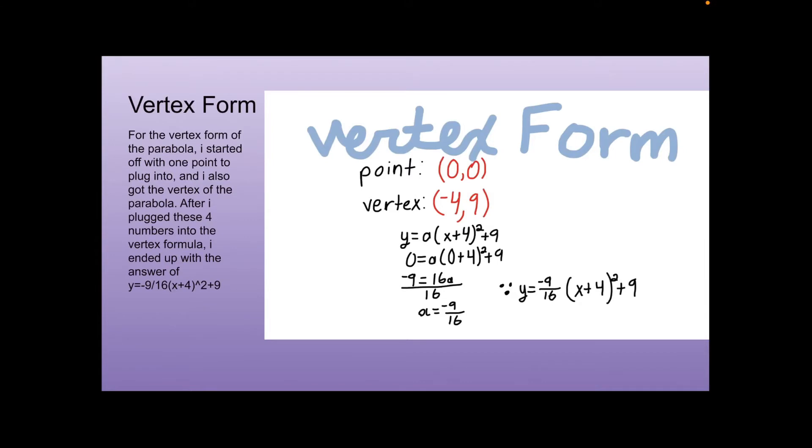All right, so vertex form. I started off with one point that I plugged into the equation and then I also plugged in the vertex. And after I got these four numbers, I did the math and I ended up with y equals negative 9 over 16 times x plus 4 squared plus 9. And that is the vertex form of my parabola.